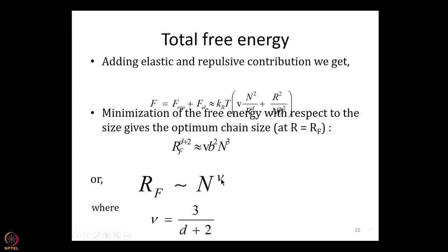So in an ideal polymer chain, the end-to-end distance scales as N to the power 1/2. However, when you take attractions and repulsions into account in a good solvent, you get a very different result: N to the power 3/5. And when D equals 4, another surprising result — it becomes 3/6, which equals 1/2. So in four dimensions, you recover the ideal chain behavior, because there is so much more volume available that repulsive interactions are not important.